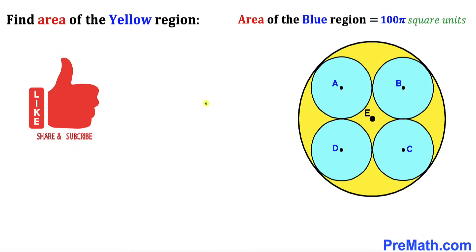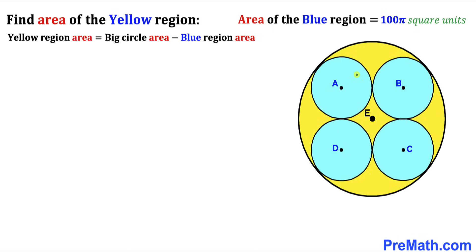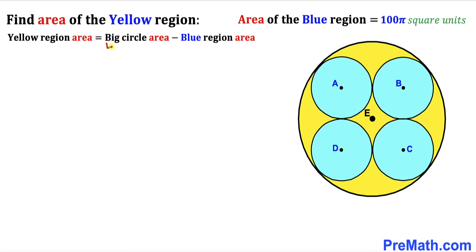Please don't forget to give a thumbs up and subscribe. Let's get started. We can observe that the yellow shaded region area is equal to the area of the big circle minus the area of the blue shaded region. We have been given the area of the blue shaded region as 100π, so our only task now is to calculate the area of the big circle.